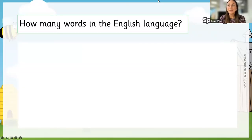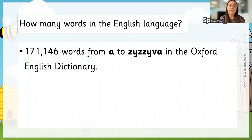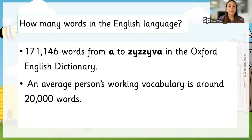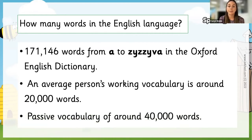So we'll start with how many words there are in the English language. There are 171,146 words in the Oxford Dictionary, ranging from A to Zizivar, which is a very small weevil-like creature. Within those words, we have an average working vocabulary of around 20,000 words, and this active vocabulary is what each person uses generally day-to-day. We also have something called a passive vocabulary of about 40,000 words.